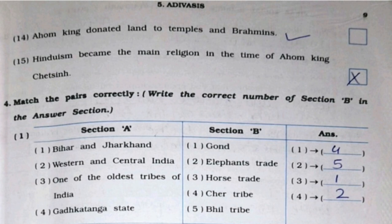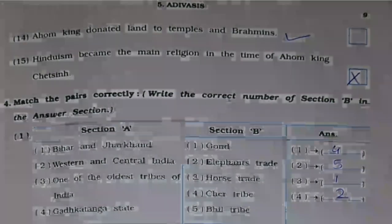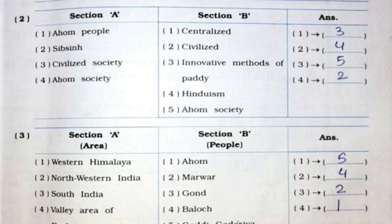Now we'll continue with Question 4, Match the Following. First section: Bihar and Jharkhand — option 4, Chair tribe. Second: Western and central India — option 5, Bheel tribe. Third: One of the oldest tribes of India — option 1, Gond. Fourth: Gadkataanga state — option 2, elephants trade. Second part: Ahom people — option 3, innovative methods of paddy. Sib Singh — option 4, Hinduism. Civilized society — option 5, Ahom society. Ahom society — option 2, civilized.